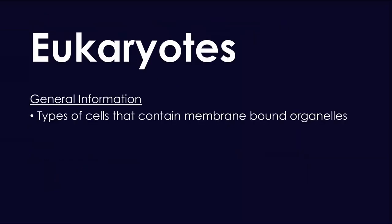Let's talk about the general information for eukaryotes. These are types of cells that contain membrane-bound organelles, and they also contain a true nucleus and linear DNA. The fact that eukaryotic cells have membrane-bound organelles, a true nucleus, and linear DNA is very important, because it differentiates a eukaryotic cell from a prokaryotic cell.